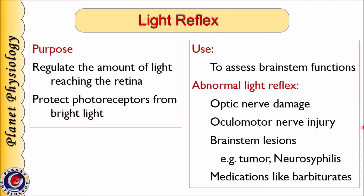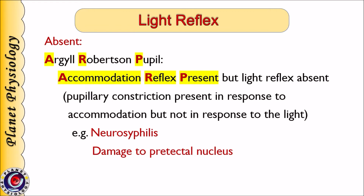Light reflex is also abnormal in case of tumors of the midbrain, neurosyphilis, or barbiturate poisoning. An interesting situation is where light reflex is absent but accommodation reflex is present. This condition is called Argyll-Robertson pupil. In this condition, pupillary constriction is present in response to accommodation but not in response to light. You can remember this by the initials ARP — Argyll-Robertson Pupil — which also stands for 'Accommodation Reflex Present.'